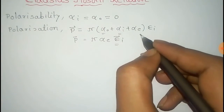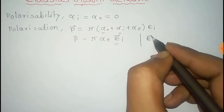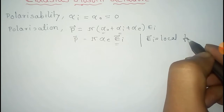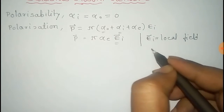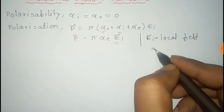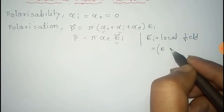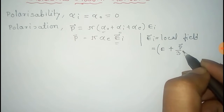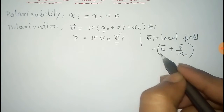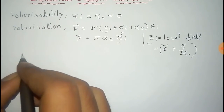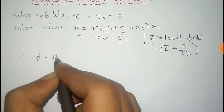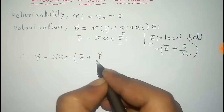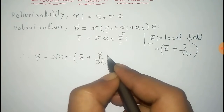Here E_i is the local field or internal electric field, and it is given by E_i equal to E plus P divided by 3·ε₀, where E is the externally applied electric field. So P equals n·α times (E plus P divided by 3·ε₀).